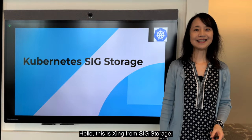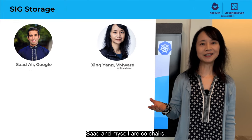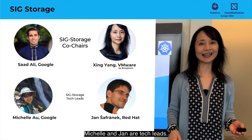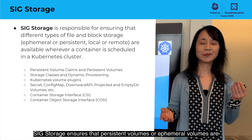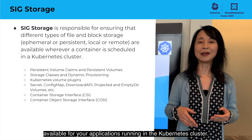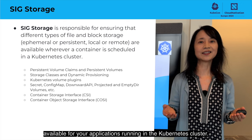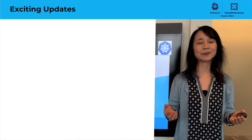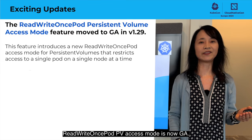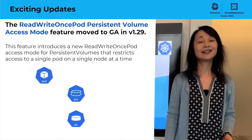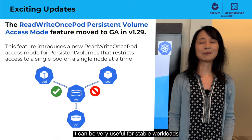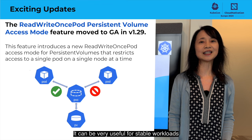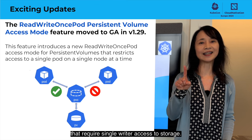Hello everyone, this is Xing from SIG Storage. Let me tell you about our SIG. Saad and myself are co-chairs, and Michelle and Yang are tech leads. SIG Storage ensures that persistent volumes or ephemeral volumes are available for your applications running in the Kubernetes cluster. ReadWriteOncePod PV access mode is now GA. This ensures that only one pod can write to the volume at a time, which can be very useful for stateful workloads that require single writer access to storage.